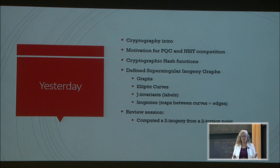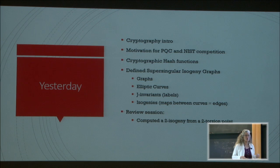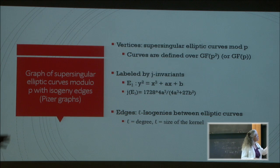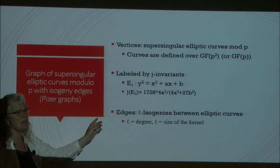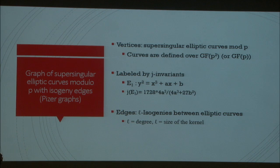So how many people successfully computed the 2-isogeny? Okay, good. Remember that the nodes of the graph were elliptic curves — actually isomorphism classes of elliptic curves. They have a label, which is the j-invariant. And the edges are these isogenies. What I told you yesterday was isogenies are basically homomorphisms characterized by their kernel.